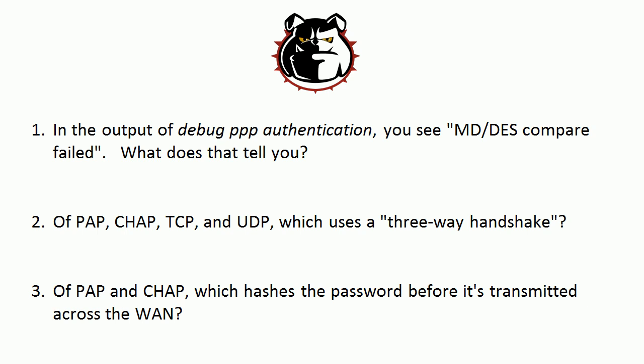Of PAP, CHAP, TCP, and UDP — CHAP and TCP both use three-way handshakes. They do different things: CHAP handles password authentication over PPP, and TCP is a world onto its own. But they both use the concept of the three-way handshake, whereas PAP and UDP do not.